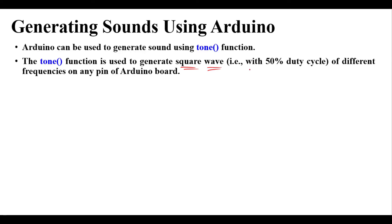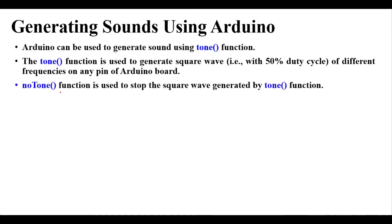The tone function can be used to generate a square wave at any pin of the Arduino board, and the square wave's frequency can be changed by using some arguments in the tone function. If you generate a square wave using the tone function, it is stopped by using the noTone function. Unless we apply noTone on that pin, we cannot use the tone function on any other new pin.